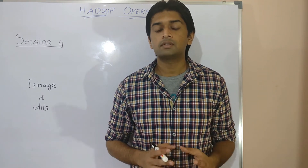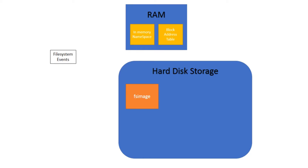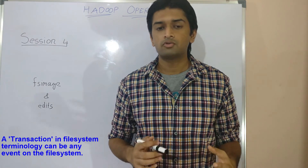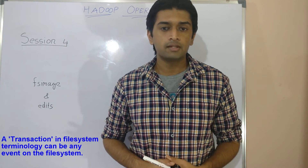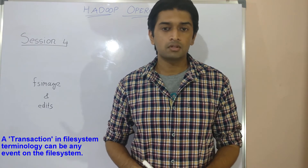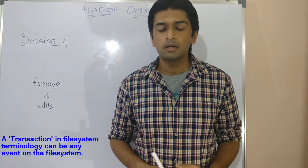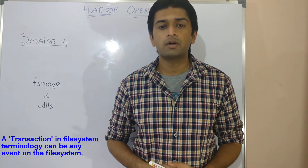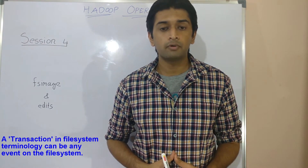Whenever a transaction happens on the file system, two things must occur: first, it is updated to the in-memory namespace, and second, it must be updated to the fsimage on disk. Only then can the transaction be marked as successful. A transaction in file system terminology can be any event — creation, deletion, or modification of directories, addition of files, changing permissions, and so on.